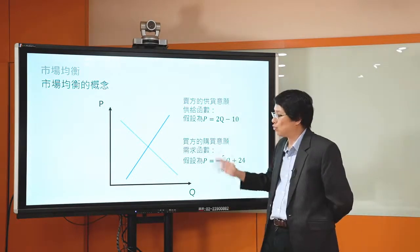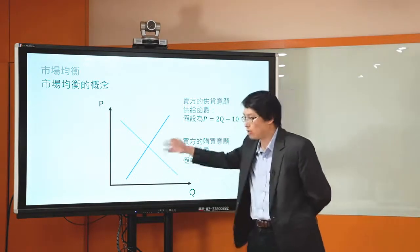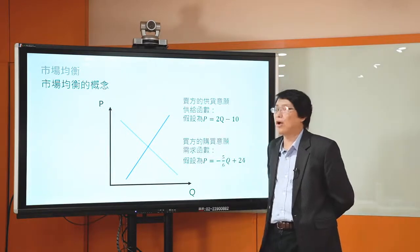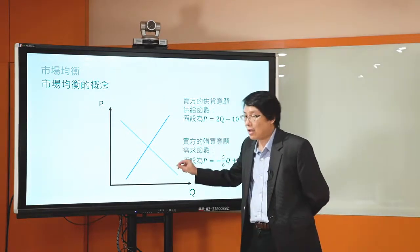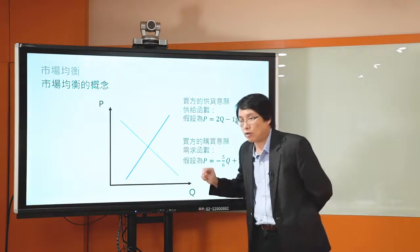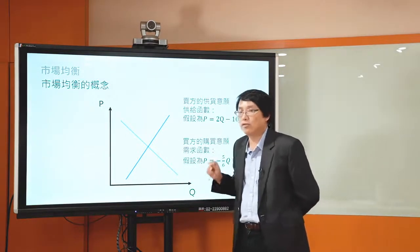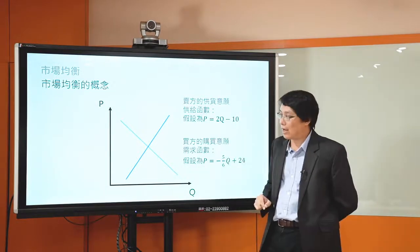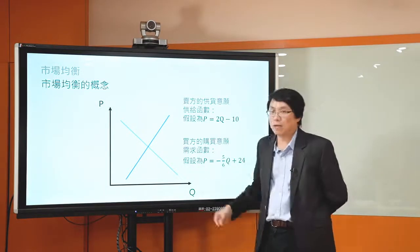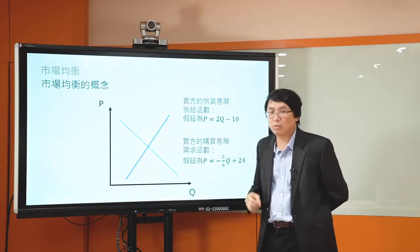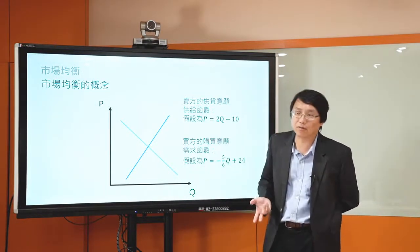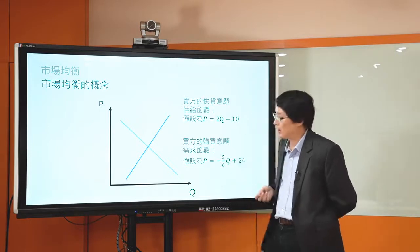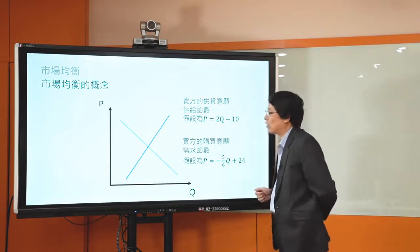所以我們現在來看看供給線。供給線是正斜率的，討論的是：假設其他條件不變的情況下，價格越高的時候，賣方的供貨意願會越高。我們在Part 3的時候講，為什麼它是正斜率的，理由是因為廠商要追求利潤極大化，簡言之就是要發大財。你在市場上賣東西，目標當然是賺錢、利潤極大化。